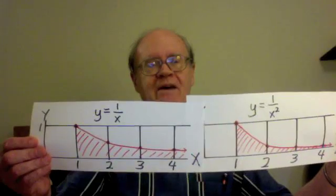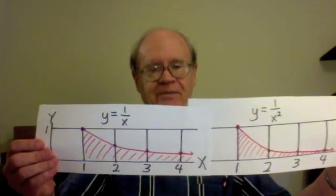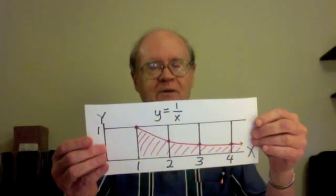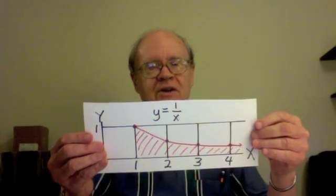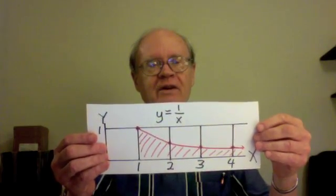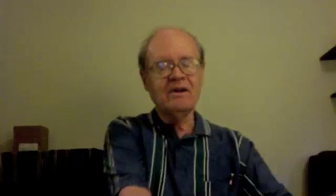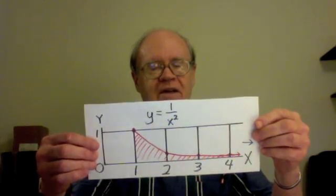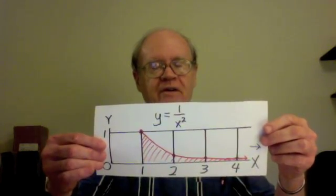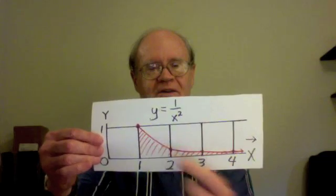But now I'm going to make two statements, one about each curve, that are very different from each other. This curve, with graph y equals 1 over x, this area is sufficiently large to cover the surface of the Earth a billion billion times. This other area, under the graph y equals 1 over x squared, is not large enough to cover these two squares. What a contrast.